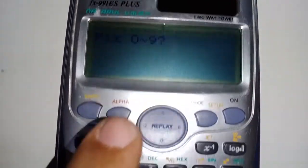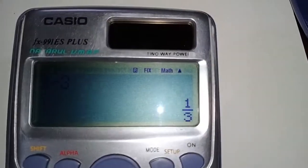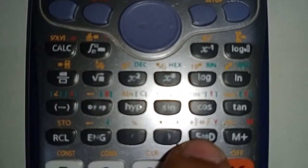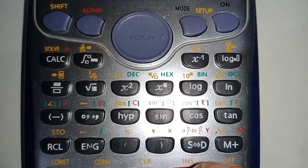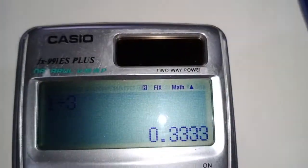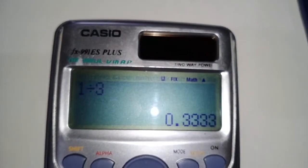If I press this button, then what happens? Now you can see my answer is 0.3333, so it has been fixed to 4 decimal places.